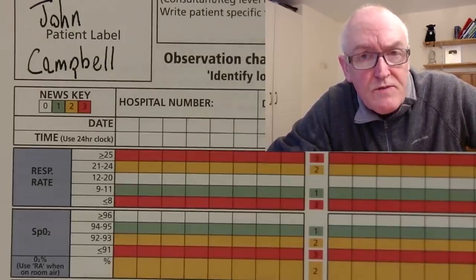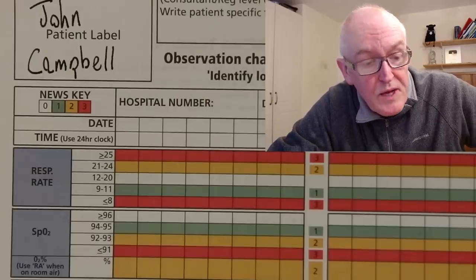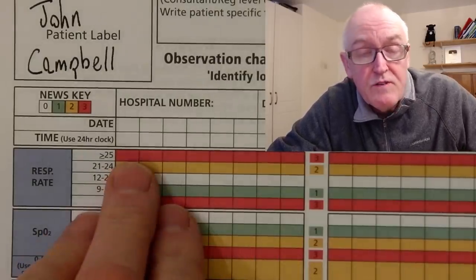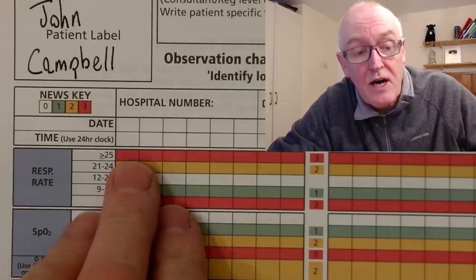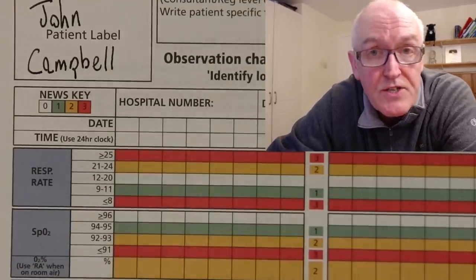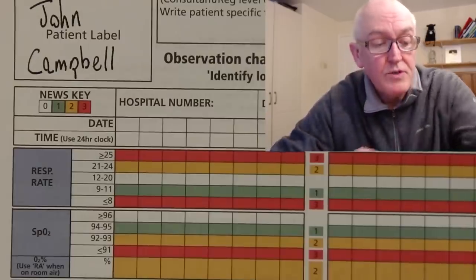So trends are very important and we always do serial observations. If someone first comes into hospital and they're not very well, we might put them on half-hourly observations or one-hourly observations. Later on we might lower that to two-hourly observations or four-hourly observations, because getting the trend is very important.